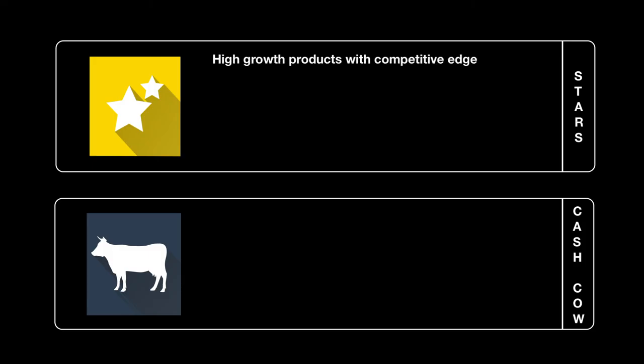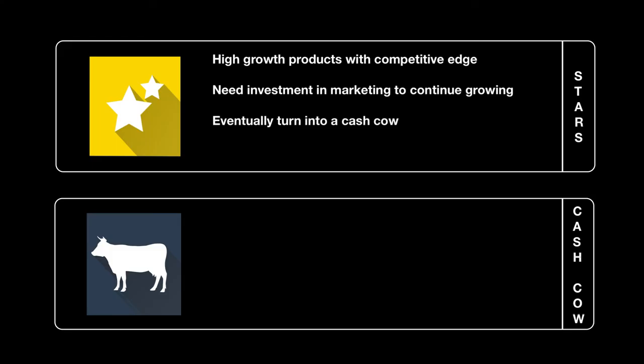A star product is one with high growth and a competitive advantage — it's in its most optimum position. More and more people are liking it, new versions are coming out and improving. However, to continue the growth, you need to keep investing in promotion and developing more varieties. Eventually, all stars will turn into a cash cow — which isn't a bad thing, as it becomes a reliable money-making product. Your strategy for a star product should be to hold on to it for as long as you can.